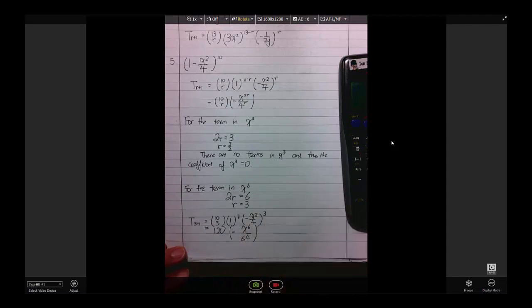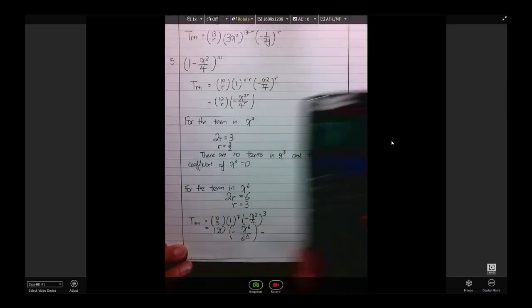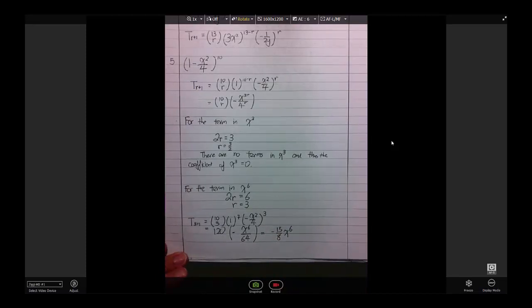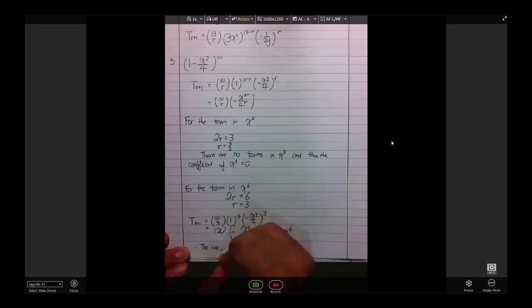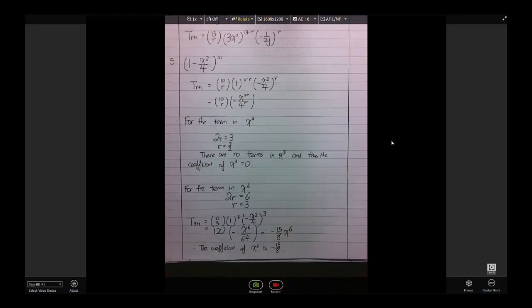If we get this here, we simplify further, 120 over 64, we get 15 over 8, so we get negative 15 over 8 x to the power of 6. And the question is, find the coefficient, so I said, therefore, the coefficient of x to the power of 6 is negative 15 over 8. And I am done with question 5.